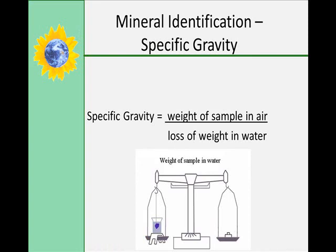Specific gravity is one that's not typically used except by geologists in the field. You will not use it, but it is something you do need to know, because we use it to identify minerals. Specific gravity is the ratio of a mineral's weight to the weight of an equal volume of water — the weight of the sample in air divided by the loss of its weight in water.